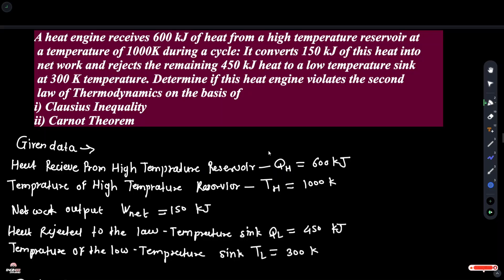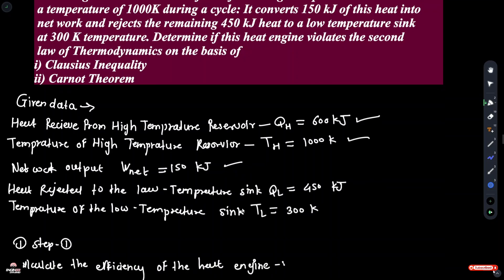Heat received from a high temperature reservoir QH is 600 kJ. Temperature of high temperature reservoir TH is equal to 1000 K. Network output W_net is equal to 150 kJ. Heat rejected to the low temperature sink QL is equal to 450 kJ, and temperature of the low temperature sink TL is equal to 300 K.